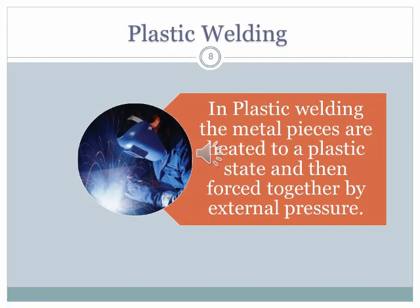In plastic welding, the metal pieces are heated to a plastic state — the state just below the melting point — and then forced together by external pressure. There are two important aspects: application of heat to bring the material to the plastic state, and application of external pressure to join the pieces.